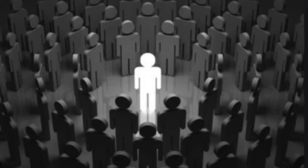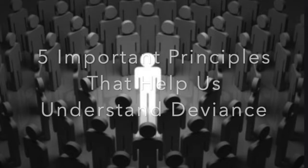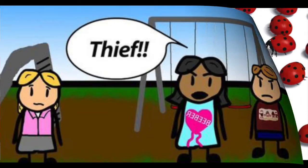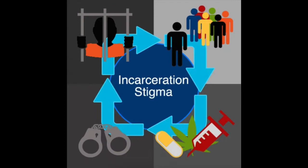There are five important principles that help us understand social deviance. 1. Deviance is socially constructed. 2. Deviance is relative, not absolute. 3. The majority determines who and what is deviant. 4. Deviance is an integral part of all societies. And 5. The violators of important social norms are often stigmatized.